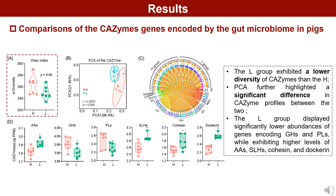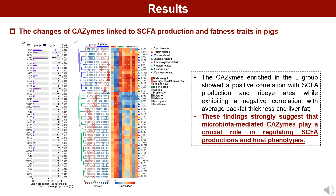Next, we compared the CAZyme genes encoded by the gut microbiome in pigs. The results showed that the L group exhibited lower diversity of CAZymes than the H group. The L group displayed significantly lower abundances of genes encoding GHs and PLs, while exhibiting higher levels of AAs and SLHs. We found that CAZymes enriched in the L group showed a positive correlation with SCFA production, while exhibiting a negative correlation with average back fat thickness and liver fat.